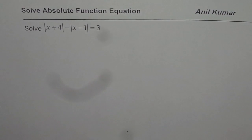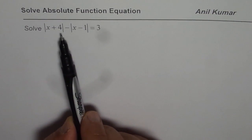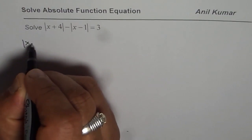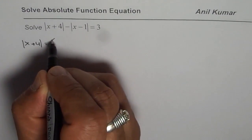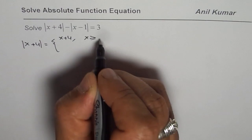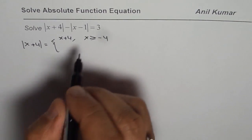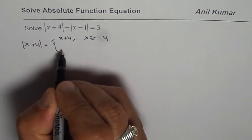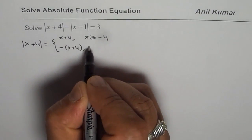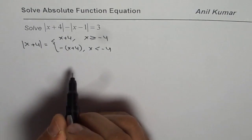In this case, let us first define both absolute functions separately and then solve. The first is absolute value of x+4, which equals x+4 when x ≥ -4, and equals -(x+4) when x < -4.